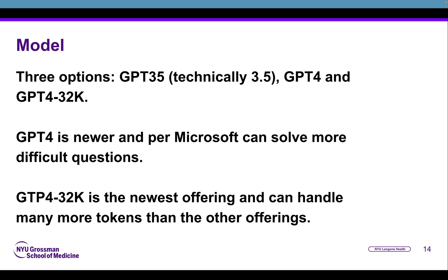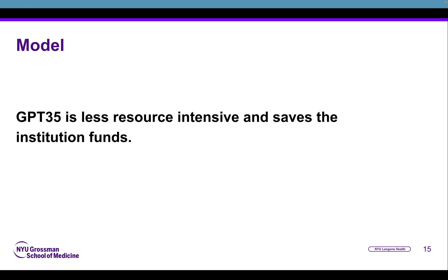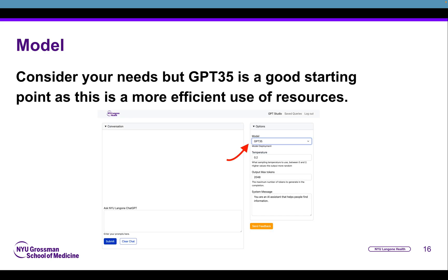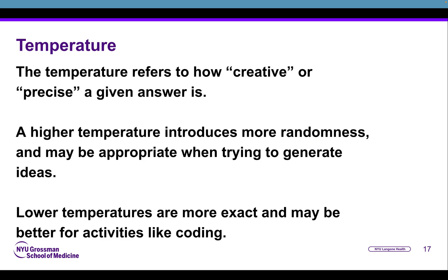There are three different model options currently at NYU Langone Health: GPT-3.5, GPT-4, and GPT-4 32K. GPT-4 is newer and per Microsoft can solve more difficult and complex questions than GPT-3.5. GPT-4 32K is the newest offering and can handle many more tokens than previous versions. That said, GPT-3.5 is much less resource-intensive, will save the institution funds, and has less of an environmental footprint. I would personally recommend trying 3.5 first to see if it meets your needs, and then increasing the model if needed.